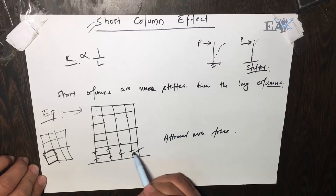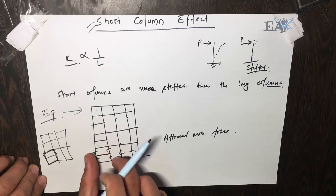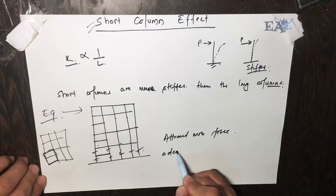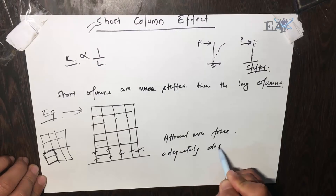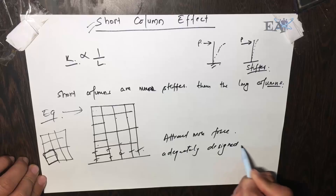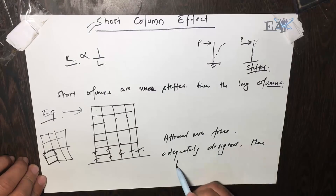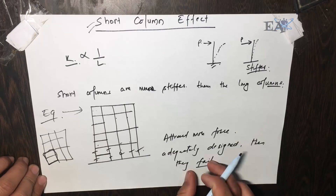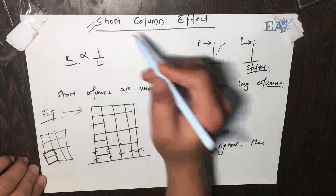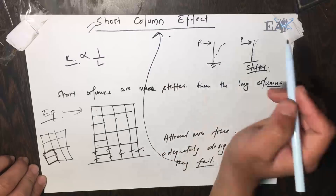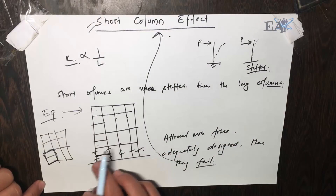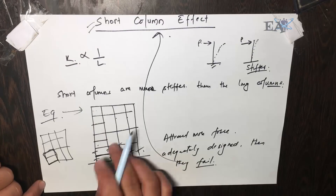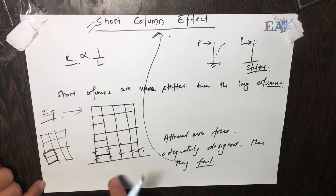These four columns attract more force compared to the three longer columns. If these four columns are not adequately designed, then they fail. This behavior is called the short column effect. We know that short columns attract more force compared to long columns, and if they are not properly designed, they fail.